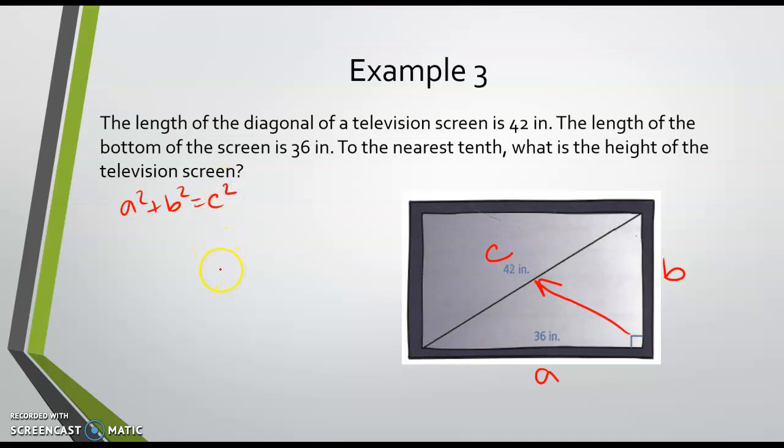So again, a squared plus b squared equals c squared. I should be seeing each of these steps. Now you don't have to write a squared plus b squared equals c squared each time, but I should see that you are writing 36 squared plus b squared equals 42 squared.